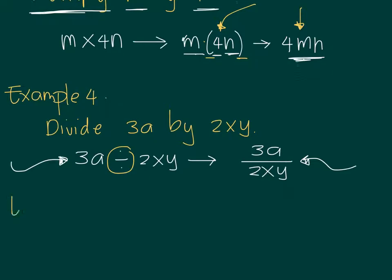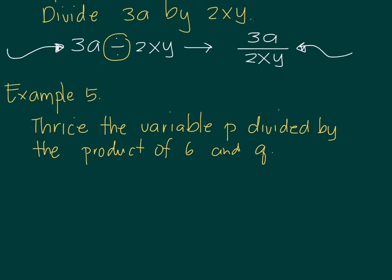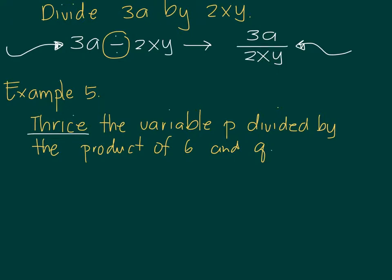One more example. Example 5: Suppose we want to translate thrice the variable P divided by the product of 6N and the letter Q. Again, we should try to understand it first. Thrice means we multiply 3 times. So thrice the variable P, that means 3 times P will be divided by the product.